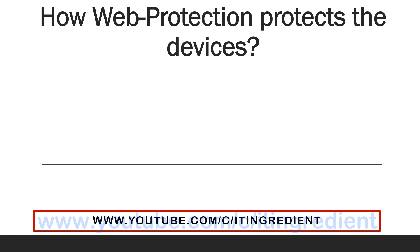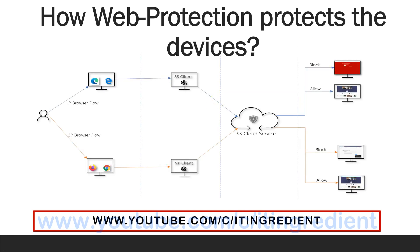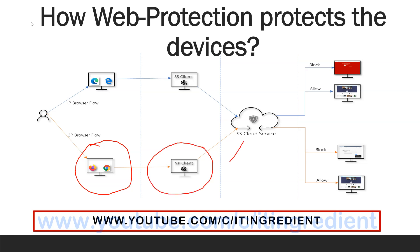The next question is how web protection protects devices against web threats, whether the user is using a Microsoft browser or any third-party browser or application. If a user is using a Microsoft browser, the SmartScreen client built into the browser sends the request to the SmartScreen cloud services, which check whether the site is potentially malicious and decide if the URL should be blocked or allowed. If the user is using a third-party browser like Google Chrome or Firefox, it is the responsibility of the network protection client to send the request to the cloud services.